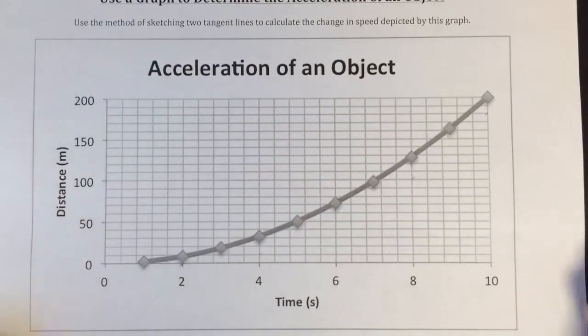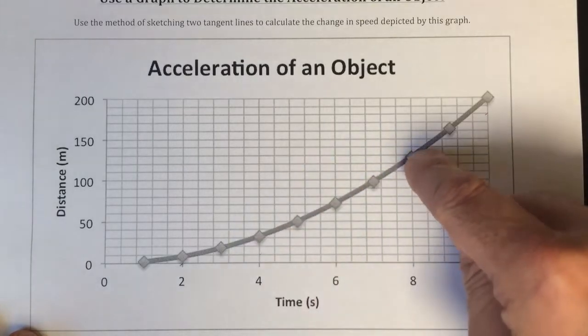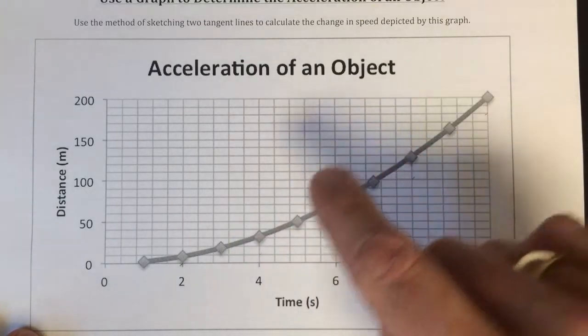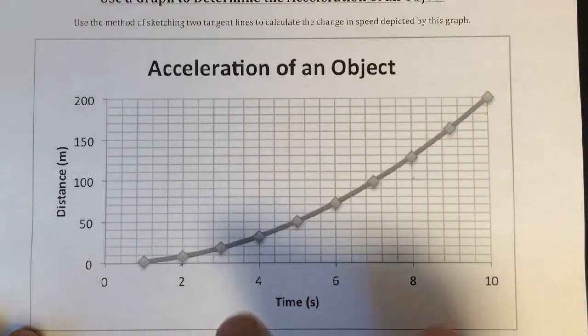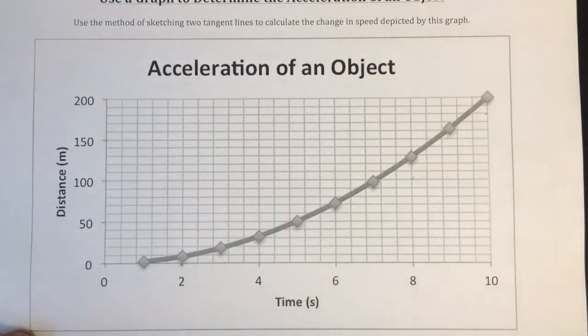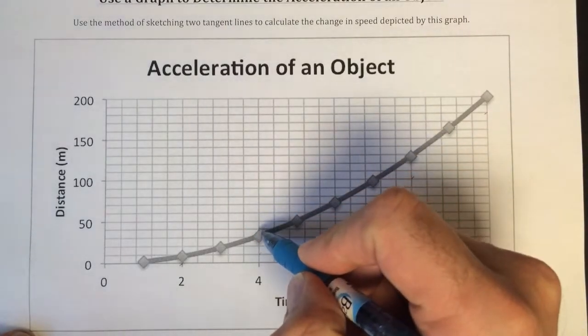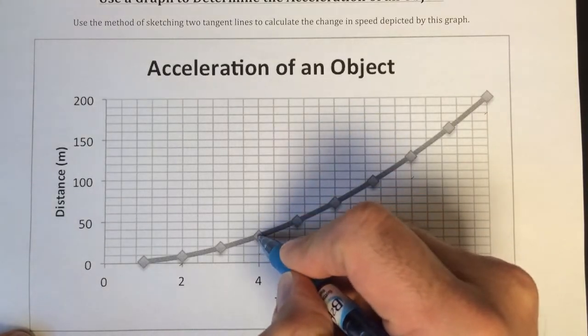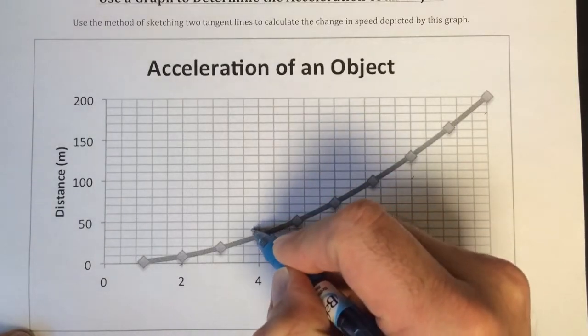For us to determine the acceleration, what I must do is identify two points on this curve and determine the instantaneous speed at those points. So let me identify the points first of all. Let's identify the first point here, four seconds.